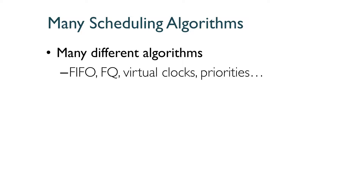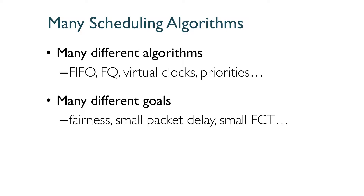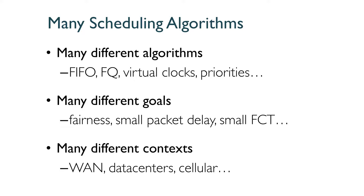As we all know, scheduling algorithms play a key role in any packet-switched network. Over the years our community has developed many different scheduling algorithms such as first-in first-out, fair queuing, virtual clock, priority scheduling, etc. And there has been this implicit assumption that we need these many different algorithms to meet many different goals in many different contexts.